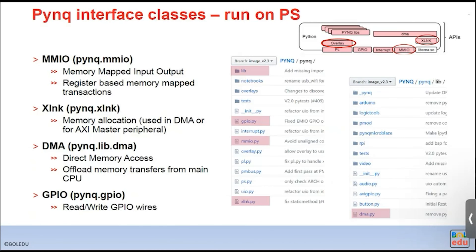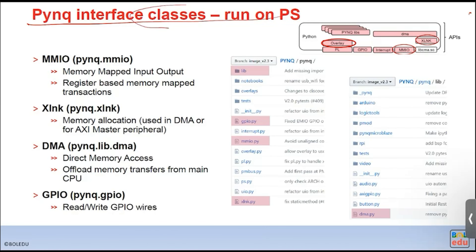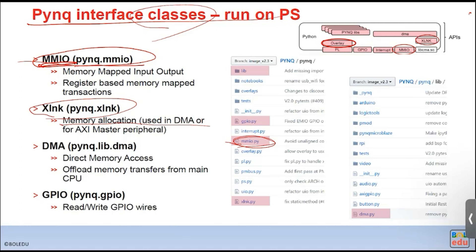These drivers are packaged into a Python interface. The iPython packages include: the MMIO package — import it to program your kernel functions via memory-mapped I/O; the XLink package — for memory allocation used together with the DMA IP; and the DMA Python package corresponding to the DMA driver.